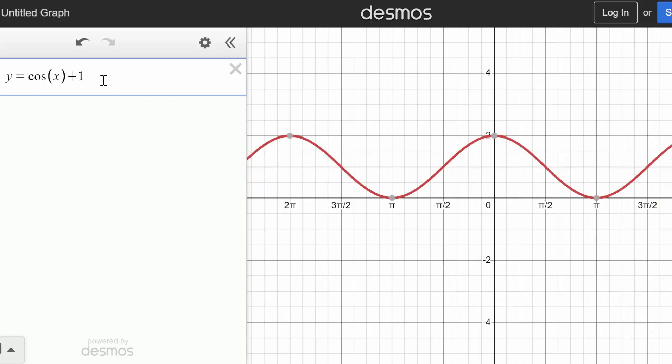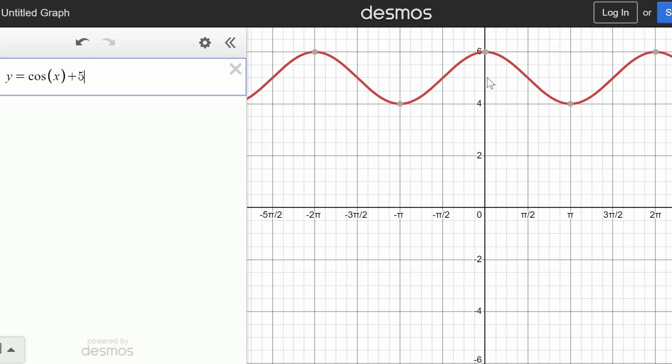we just need to add or subtract on the outside of the function. You can see if I add one, it shifts everything up one unit. If I add two, it shifts everything two units. If I add five, then it shifts everything up five units.